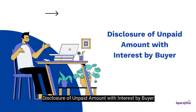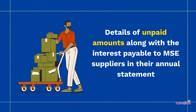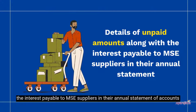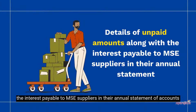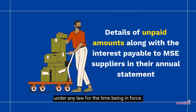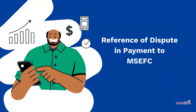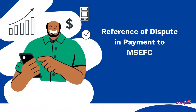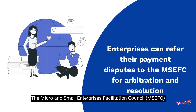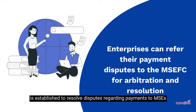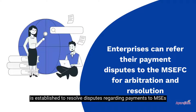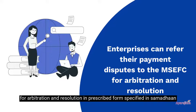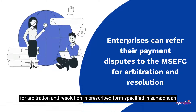Fifth, Disclosure of Unpaid Amount with Interest by Buyer. Buyers are required to disclose the details of unpaid amounts along with the interest payable to MSE suppliers in their annual statement of accounts, in order to get their annual accounts audited under any law for the time being in force. Sixth, Reference of Dispute and Payment to MSEFC. The Micro and Small Enterprises Facilitation Council (MSEFC) is established to resolve disputes regarding payments to MSEs. Enterprises can refer their payment disputes to the MSEFC for arbitration and resolution in the prescribed form specified on the Samadhan website.